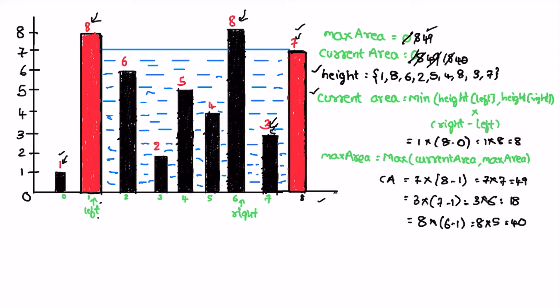Max of 40 and 49 is still 49. In the next iteration, since both pointers have the same value, we move left by one to the right. Now left is at index 2 and right is at index 6. Current area is minimum of both heights, which is 6, times right minus left (6 minus 2), equals 6 times 4, equal to 24. Max among them is still 49.